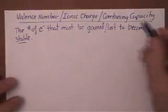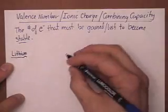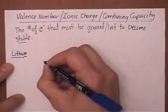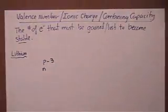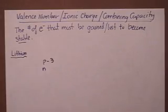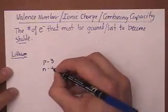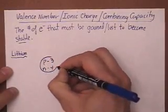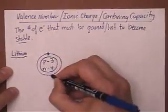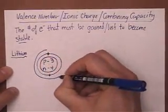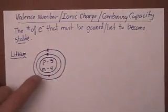Let's use something simple — I'm going to go with lithium. Lithium is really easy to draw on the periodic table. It has three protons, and lithium's atomic mass is about 7, so 7 minus 3 gives us four neutrons. That gives us two electrons in the first orbit and one in the second orbit. There's the Bohr model for lithium.